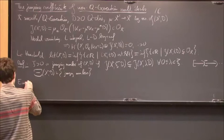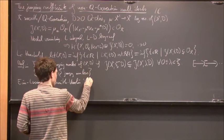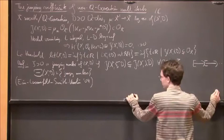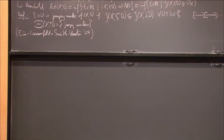The multiplier ideal will always be constant on half-open intervals, closed on the left and open on the right, and the boundaries of these intervals are simply the jumping numbers. I denote the set of all jumping numbers by Ψ(X, D). The logarithmic threshold is simply the first one of these. There is a paper by Ein, Lazarsfeld, Smith, and Varolin from 2004 where they first systematically studied these numbers and showed they appear in several different contexts.